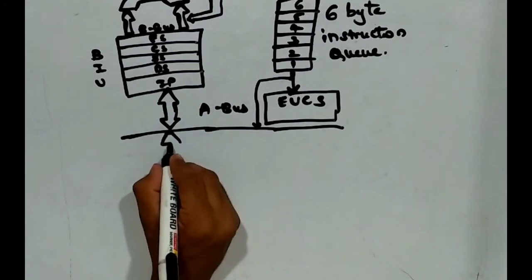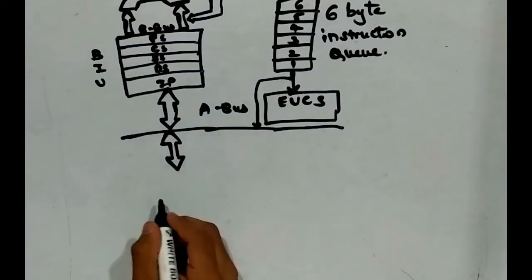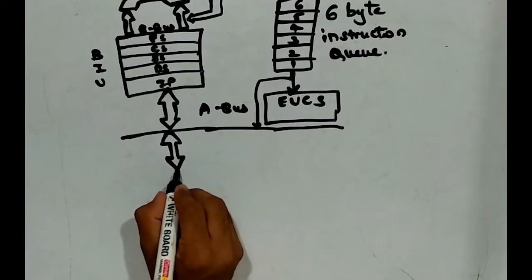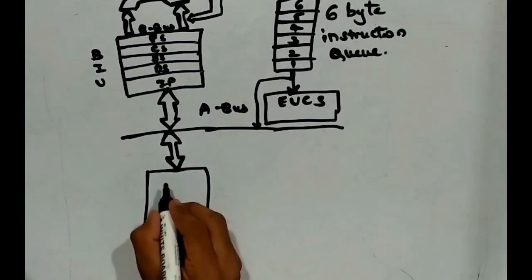Now we are going to draw the A bus. Here is the execution unit. It has all the registers.